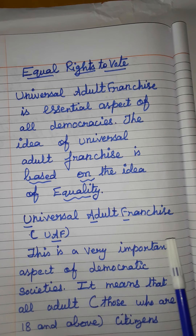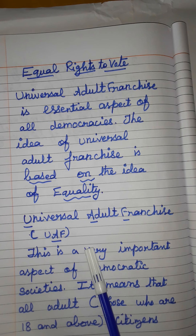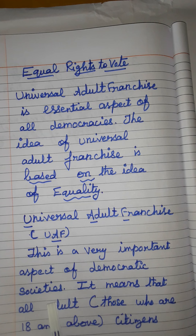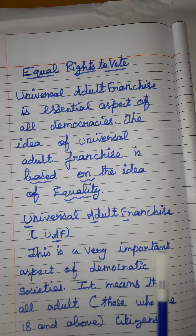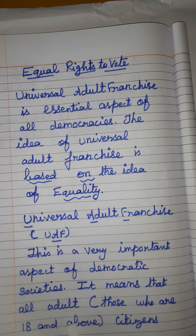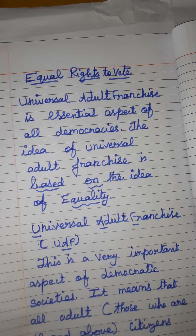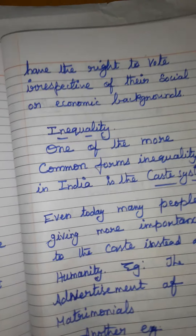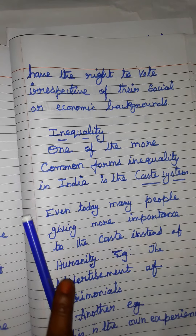What is Universal Adult Franchise? In short form it is UAF. This is a very important aspect of democratic society. In a democratic country, UAF means all adults — those who are 18 years and above — have a right to vote irrespective of their social or economic background.